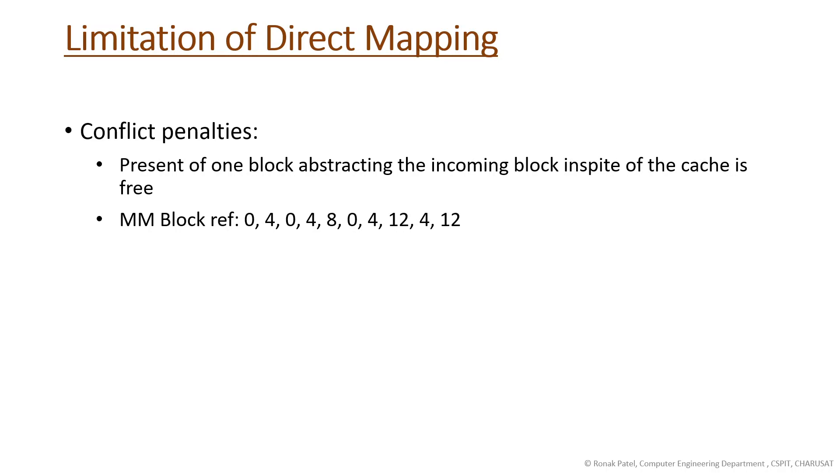What are conflict penalties? The presence of one block obstructs the incoming block even when the cache has free space. In the previous example, we had four blocks of cache memory.